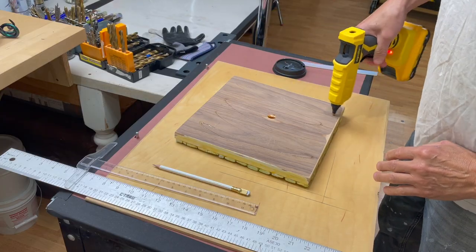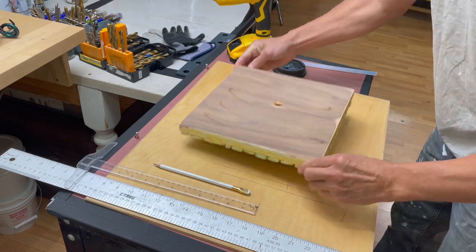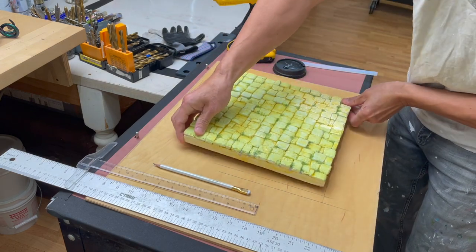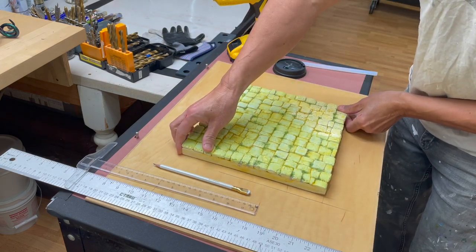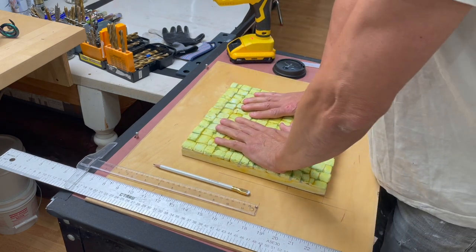Glue the cobblestone road onto a flat board with a smooth surface. Make sure it's a smooth sealed surface so the silicone won't stick to it. And give yourself some extra space around the edges.